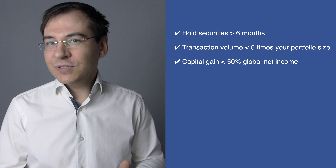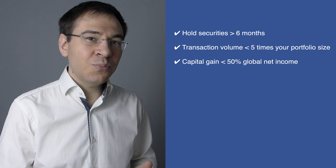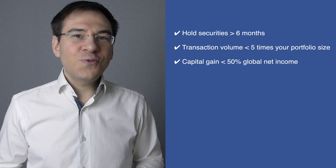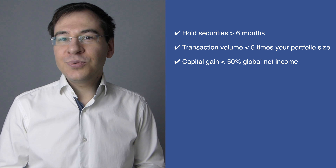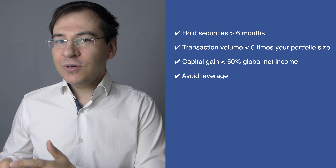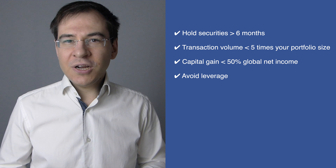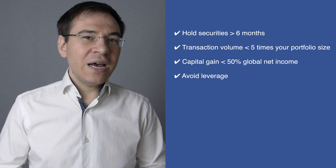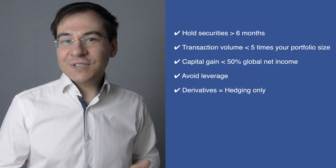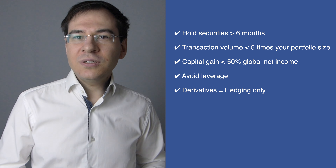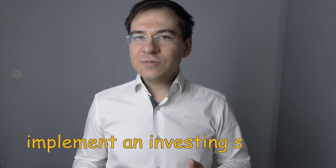Number three: the capital gains generated through your securities trading do not account for more than 50% of your net income as a rule of thumb. Number four: you use your own assets to finance the purchase of securities — avoid lending from your broker, or make sure you're investing in securities that deliver higher interest or higher dividends. Number five: if you invest using derivatives and options in particular, these can only be used to hedge your own securities. If you do not follow those criteria, you will be considered a professional trader and all of your income will be taxed at your marginal tax rate, and you will also need to pay social charges.